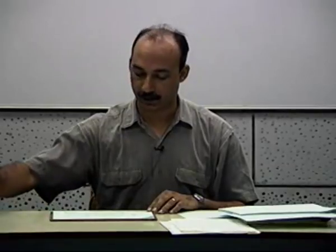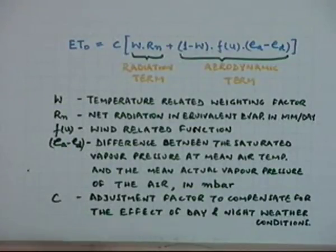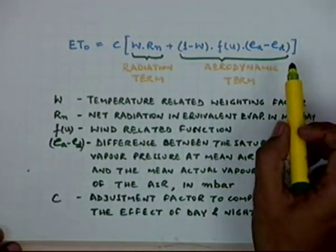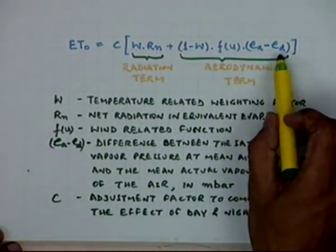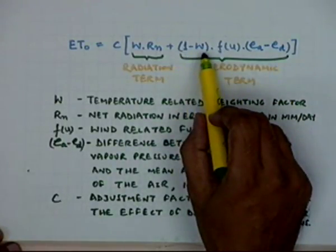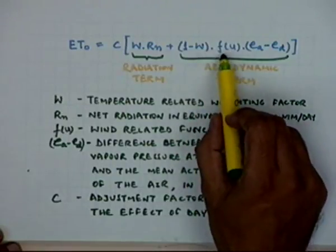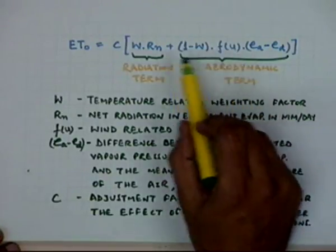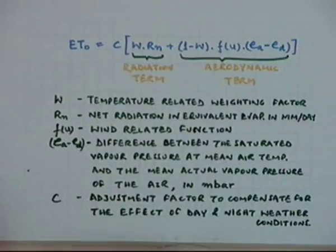Let us get back to the same expression of the Penman equation. We were dealing with the various components of this equation. We had looked at the vapor pressure deficit and the weightage factors of the wind function. The only thing which is left is the net radiation, so we will start today with the net radiation.